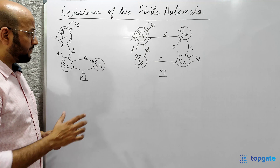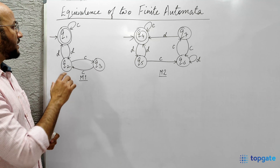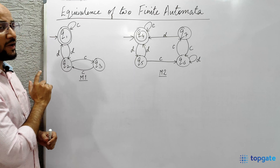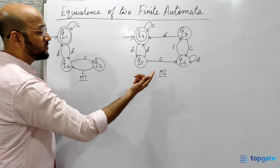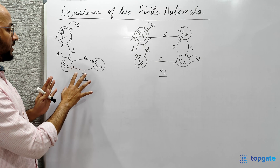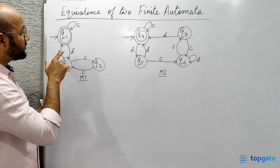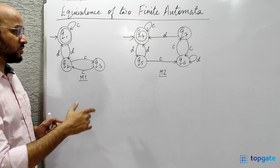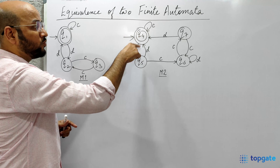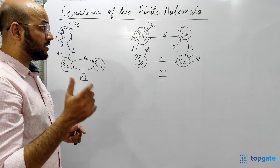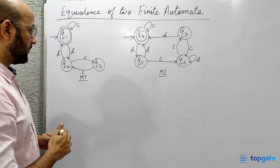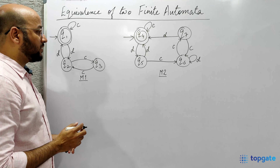The second step says that if in one machine the initial state is also the final state, then in the other machine the initial state should also be the final state. In M1, Q1 is both the initial and final state. Similarly in M2, Q4 should also be the final state — that is the condition for equivalence. Now let us find out whether these machines are equivalent or not.